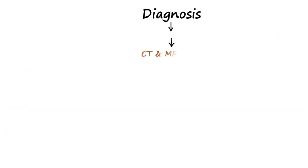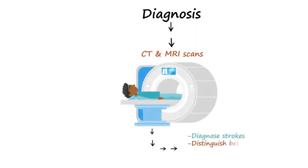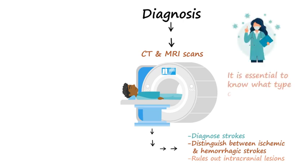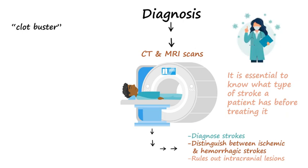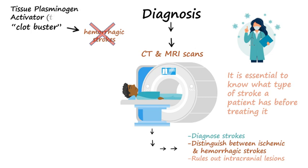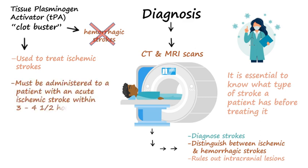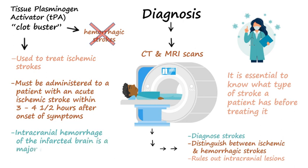CT and MRI scans are important for diagnosing strokes and distinguishing between ischemic and hemorrhagic stroke. They're also used to rule out intracranial lesions that may present with similar symptoms. It is essential to know what type of stroke a patient has before treating it. If it is an ischemic stroke due to a blood clot, clot busters to break up the clot are helpful. However, clot busters are contraindicated in hemorrhagic stroke and would worsen the problem. Tissue plasminogen activator is a clot buster useful in the treatment of some ischemic strokes caused by blood clots. It should be administered within three to four and a half hours after the onset of symptoms. The major complication associated with TPA is intracranial hemorrhage of the infarcted brain.